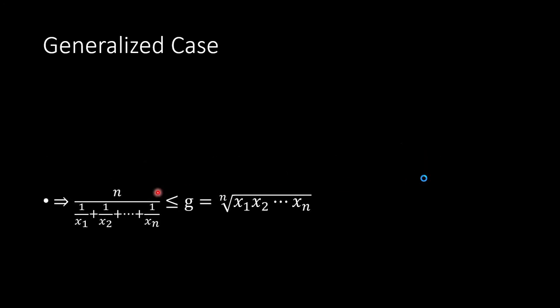Therefore, we have n divided by this term less than or equal to g, which g is the nth root of the product. That got approved.